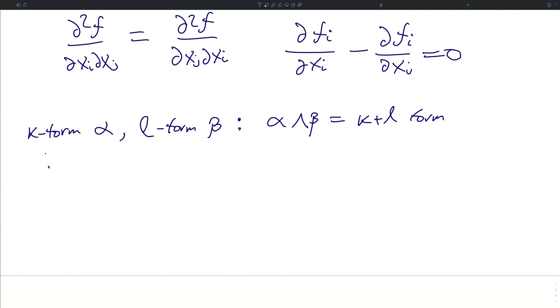If we have vectors V and W, then the wedge product of alpha beta valued at a point P on V, W is going to be equal to alpha_P of V times beta_P of W minus alpha_P of W times beta_P of V. This is that alternating bilinear form.